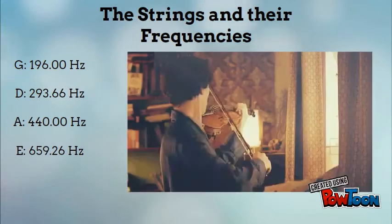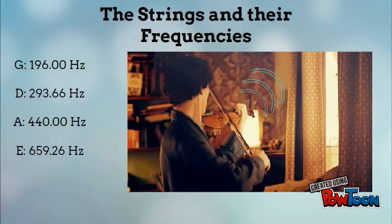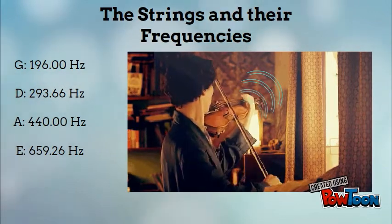As we said, there are four strings on the violin. They each have the same length, but different mass and tension. Therefore, each string has a different vibration.